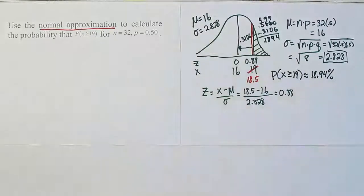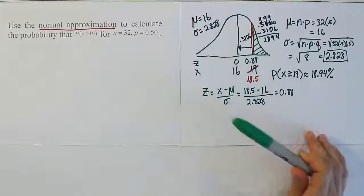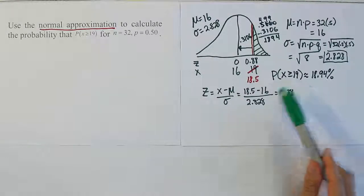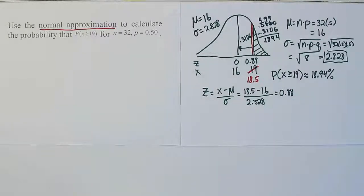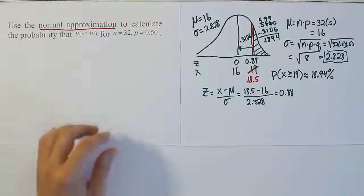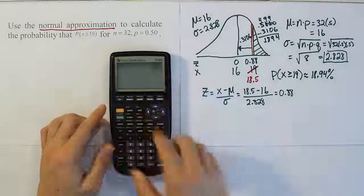Before we end this video, I want to talk about how accurate is this approximation technique. We're using the bell curve to approximate something that's binomial in distribution. Let's actually see what the real answer is for this problem if you use the binomial formula.